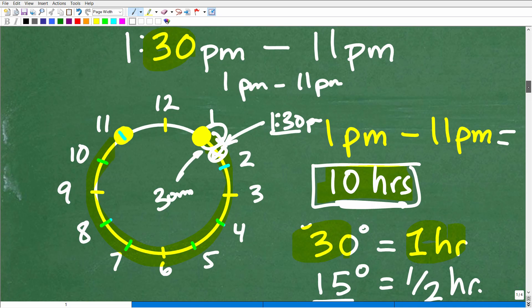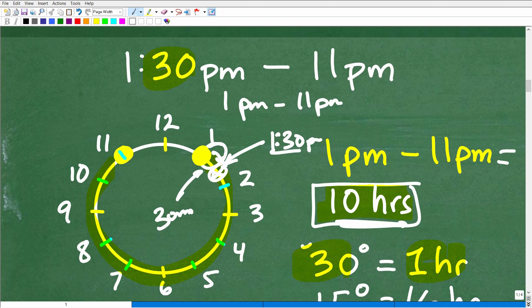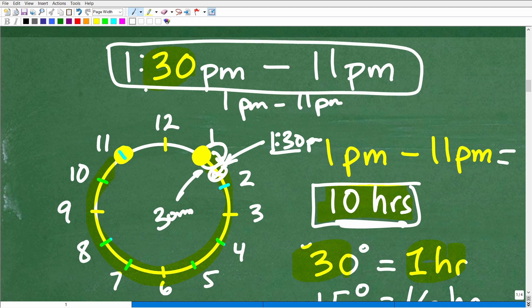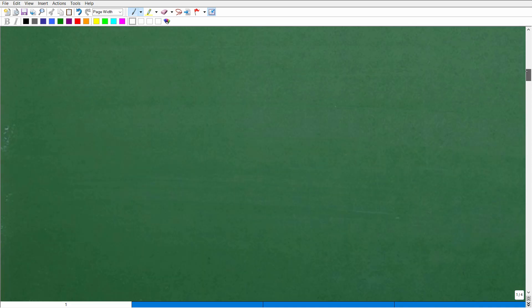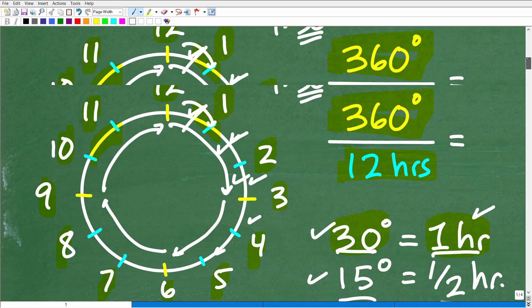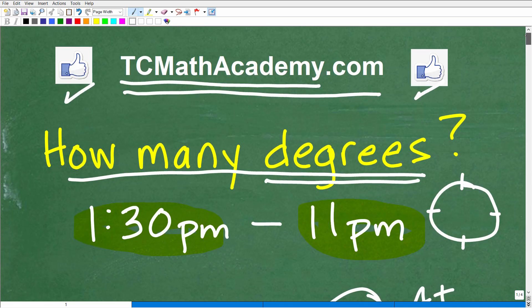Now, another way you could do this problem is just say, okay, same information, 30 degrees for 1 hour. So, you could just say, oh, instead of 10 hours here, this is 9.5 hours times that 30. You would get the same answer. All right. So, hopefully, this was an entertaining and useful math problem.